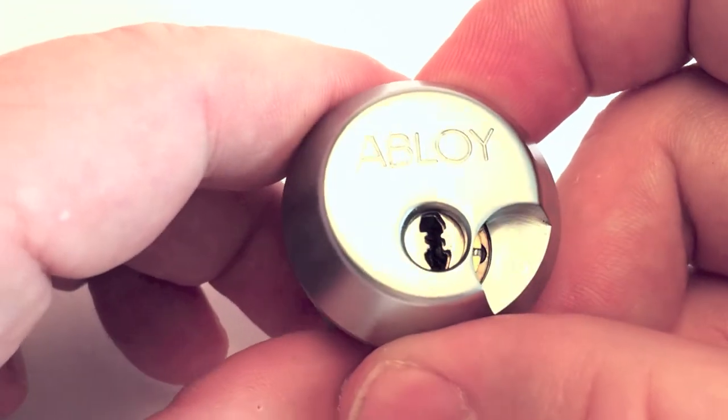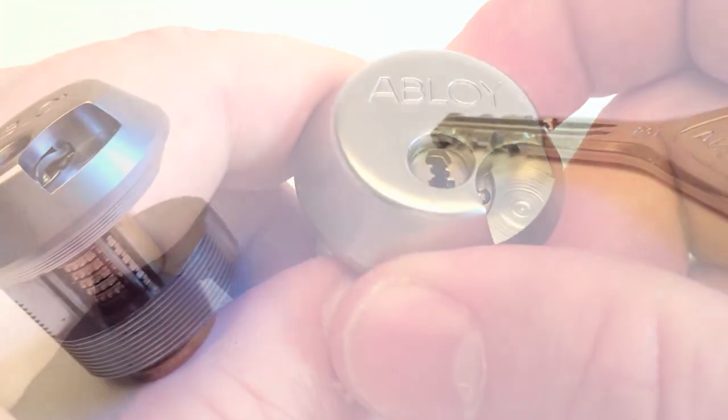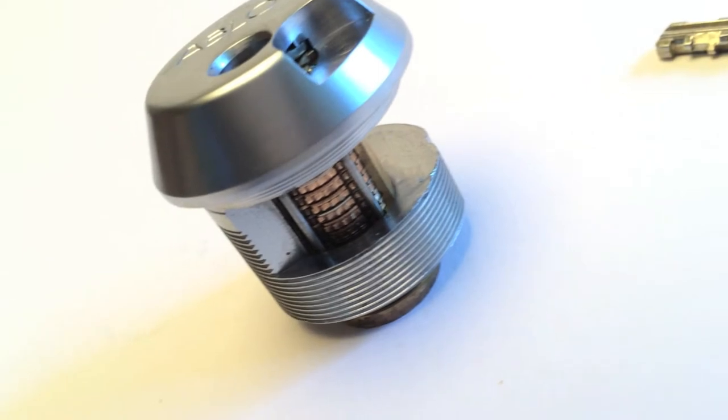In 1907, Emil Henriksen invented the unique Abler ProTek locking mechanism in Helsinki.